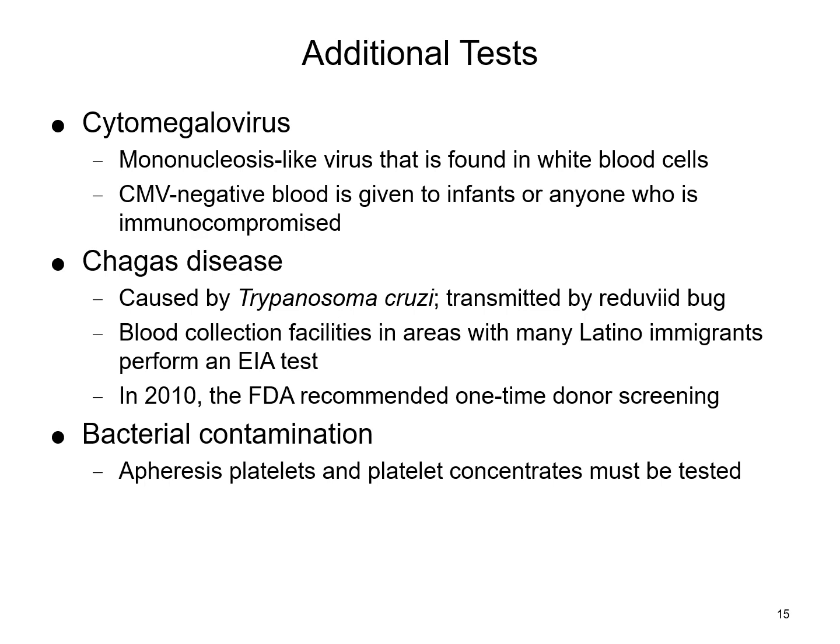For bacterial contamination, apheresis platelet products or any platelet product maintained at room temperature have a higher risk of bacterial contamination, as organisms can grow if introduced during the collection process. Therefore, facilities must have a way to screen those platelets before issuing units to a recipient, to ensure the product is not contaminated and does not risk causing an infection.